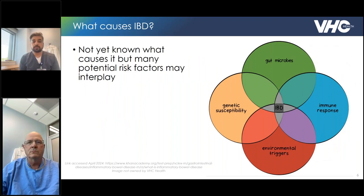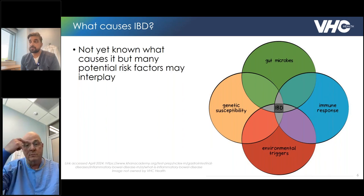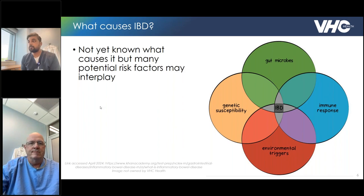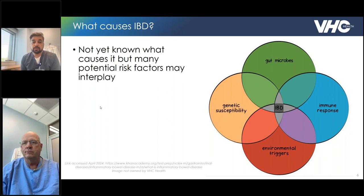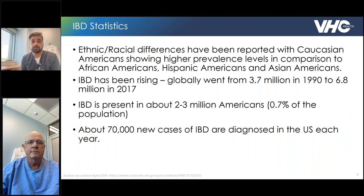We don't really know what causes inflammatory bowel disease, and there seem to be a lot of different risk factors at play. Genetic susceptibility has been observed — about 5 to 20% of patients with IBD have a first-degree relative with the condition. We also see environmental triggers: patients with a history of gastrointestinal infections, people who eat processed foods, smoking, and living in urban areas have all been shown to be risk factors. More recently, we've been starting to see that there may be an imbalance of gut bacteria in the colon and intestine, and there may be a defective immune response from this.